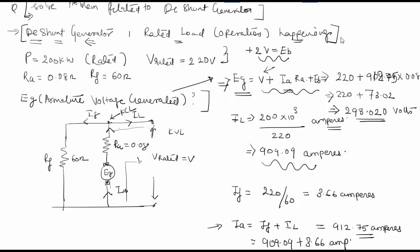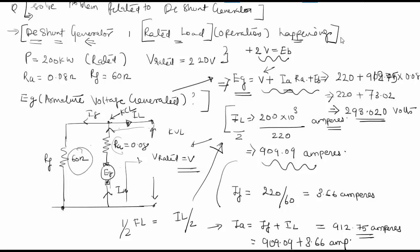Most questions for the shunt generator will follow this same approach, though the unknowns could vary — for example, finding the field resistance, field current, or armature current. If the generator is operating at half full load instead of rated load, the load current would be divided by 2 and the full calculation repeated. Most questions depend on this circuit and the parameters related to it.